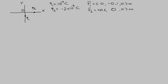The first step in calculating the electric force vector is to find the position vector that goes from charge 1 to charge 2. To calculate this position vector, we need to calculate R2 minus R1. If we do the calculations, we will find that this is (0.2, 0.1, 0.0) meters.